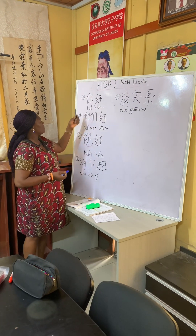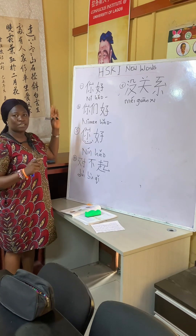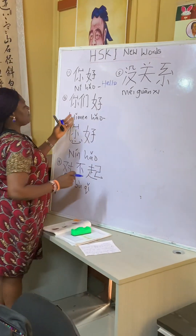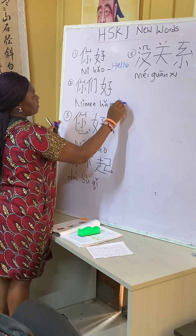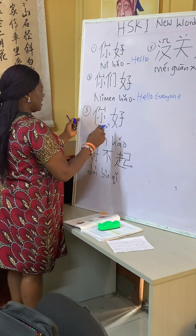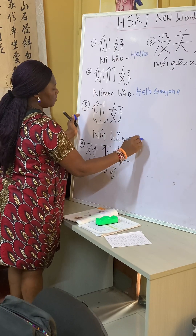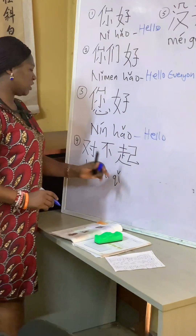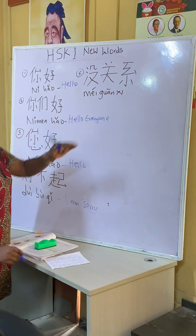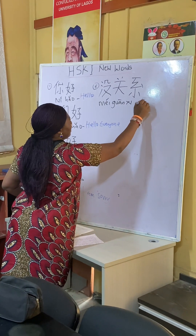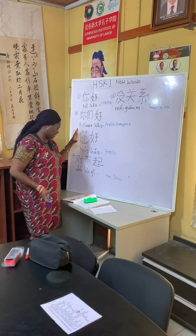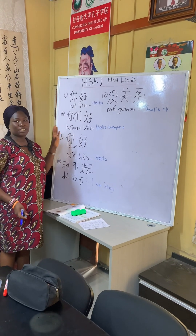Summary of HSK 1 Chapter 1 new characters: 你好 (nǐ hǎo) means hello. 你们好 (nǐmen hǎo) means hello everyone. 您好 (nín hǎo) means hello in a polite way. 对不起 (duì bu qǐ) means I am sorry. 没关系 (méi guān xi) means that is okay, it doesn't matter, or you are welcome. This is the new vocabulary in Chapter 1 of the HSK 1 textbook.